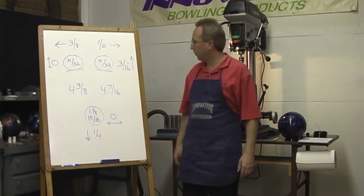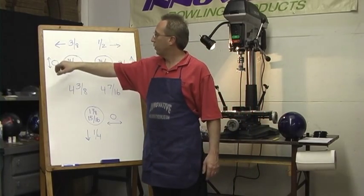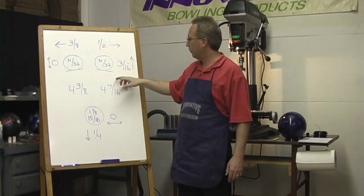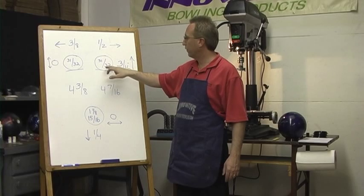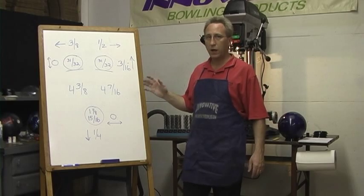On the middle finger we're going 31/32" hole, zero forward and reverse, 3/8" left. And on the ring finger, 31/32" hole, half right, 3/16" reverse.